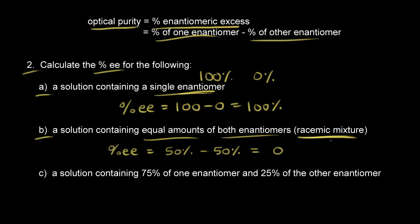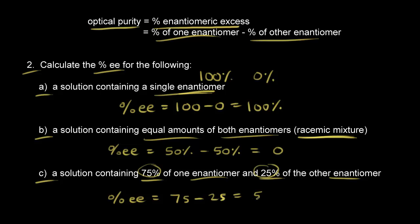A racemic mixture gives a net rotation of 0 if you have equal amounts of both enantiomers. For part C, we have a solution containing 75% of one enantiomer and 25% of the other. The percent enantiomeric excess equals 75% minus 25%, which is 50%. So we have 50% excess of this enantiomer and a 50% optically pure solution.